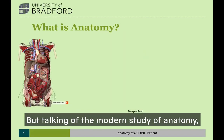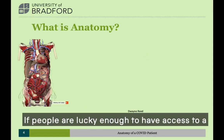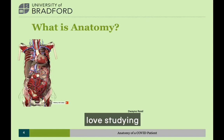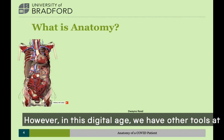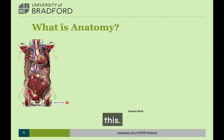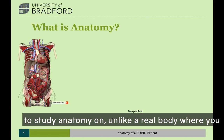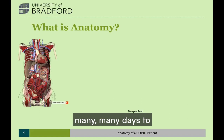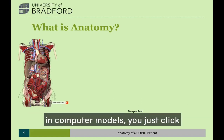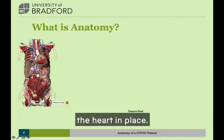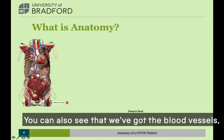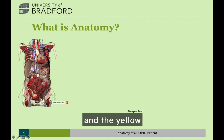Talking of the modern study of anatomy, we still do body dissections. If people are lucky enough to have access to a dissection room, they are fascinating places — I loved studying there as a student and as a teacher. However, in this digital age we have other tools as well. This image comes from a computer program for studying anatomy. Unlike a real body, in computer models you just click a few buttons and it removes pieces. Here we still have the heart, intestines, and bladder, but I've removed the liver and stomach to see deeper structures. You can also see blood vessels — the blue and red tubes — and the very fine yellow things dotted around are the nerves.